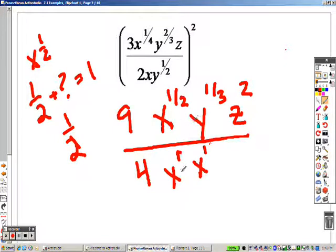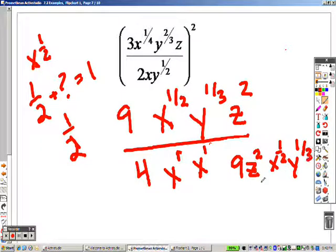So, when I start combining like terms, I have a 9 still. I have my z, I'm putting everything that's not a fraction, z squared. I have an x to the 1 half. And I have a y to the 1 third over a 4. And I have an x squared.